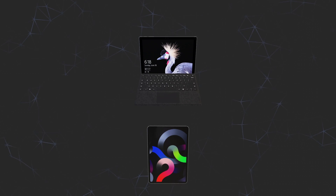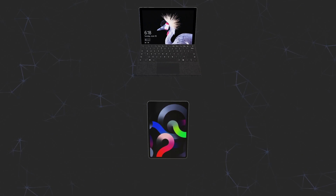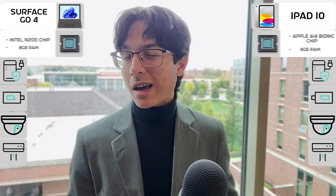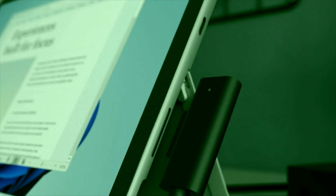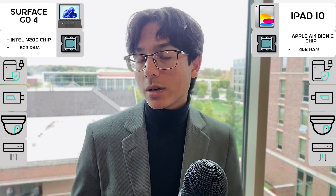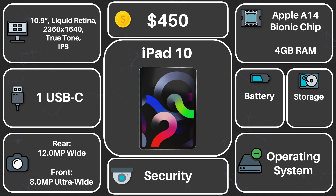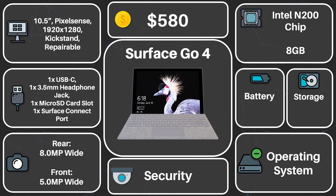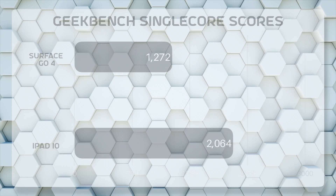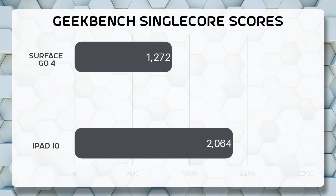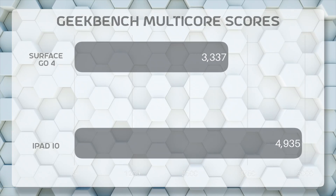Now let's move on to the internals — first, the internal specs. Given that these two are a bit different in terms of their functionalities and builds, this will not be as clean of a comparison, because what you do with a laptop is typically different from what you do with a tablet. But even still, there is a winner in terms of processing power. The iPad 10 sports the A14 Bionic chip, while the Surface Go 4 rocks the new Intel N200 chip — both are great. Here are the single-core and multi-core performance benchmarks of these device configurations. As you can tell, the iPad is just a bit faster.